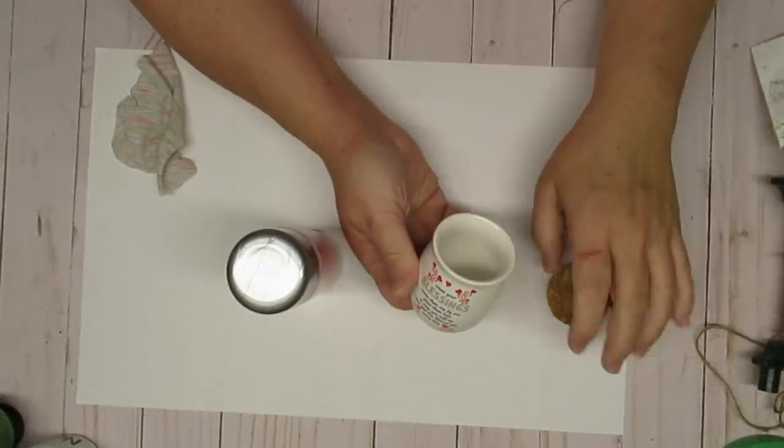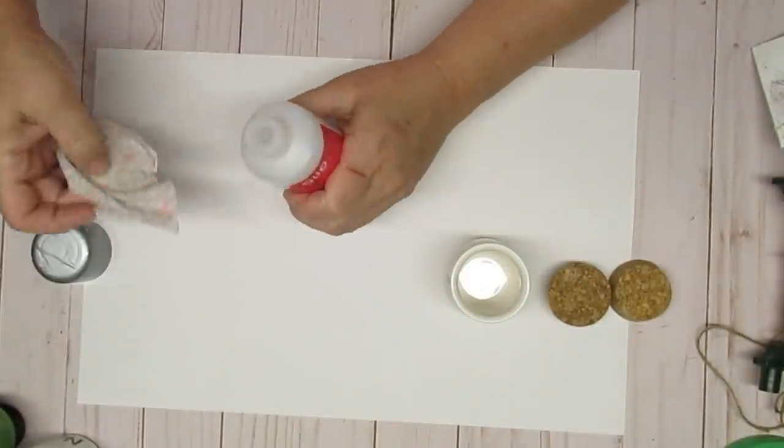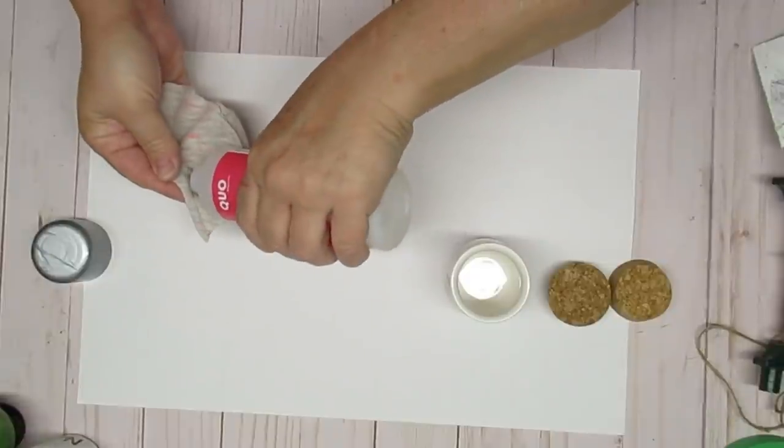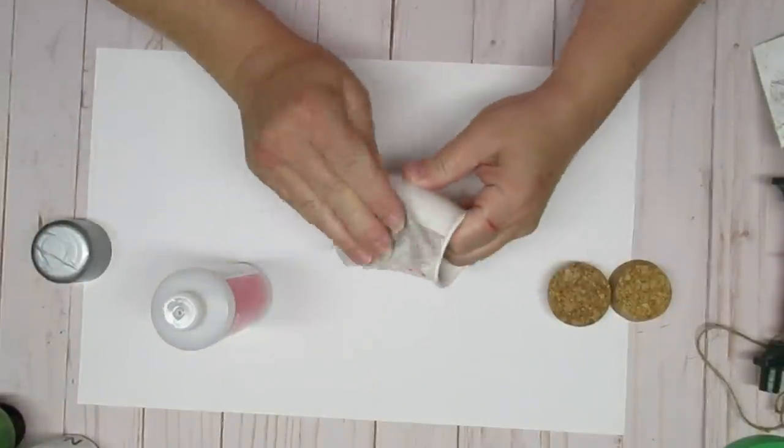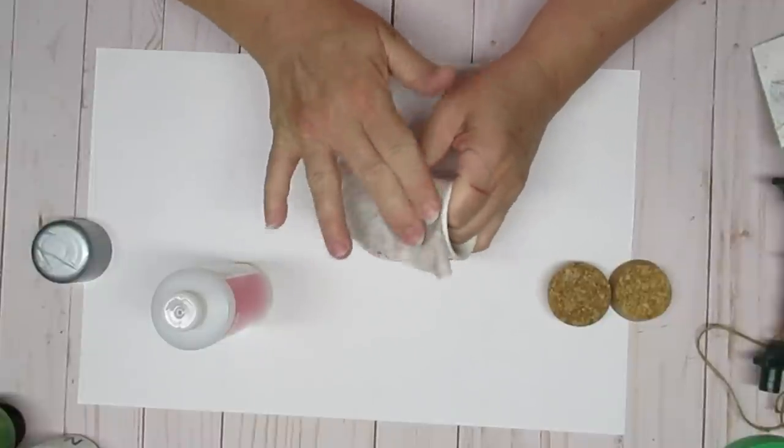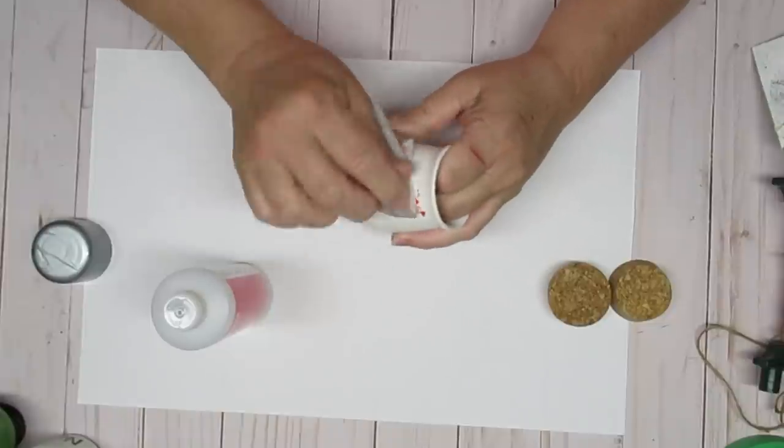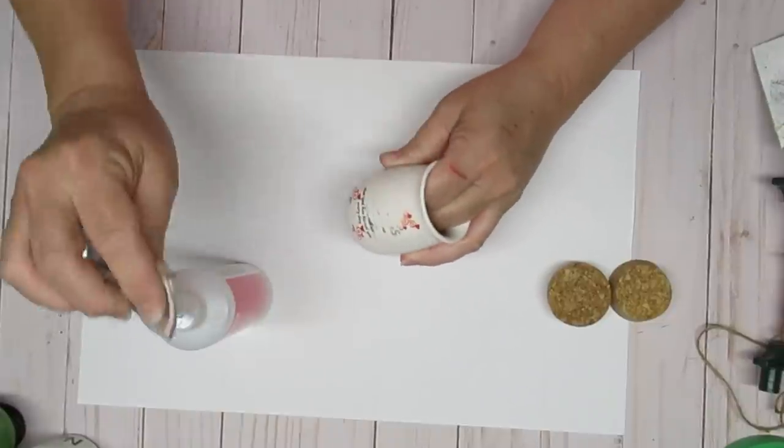My fifth and final project for you today is using one of these little cups that came from the Dollar Tree around Valentine's Day. It has a little heartfelt saying on it which of course I'm going to remove and I'm using 100% acetone and a small rag to wipe this right off.